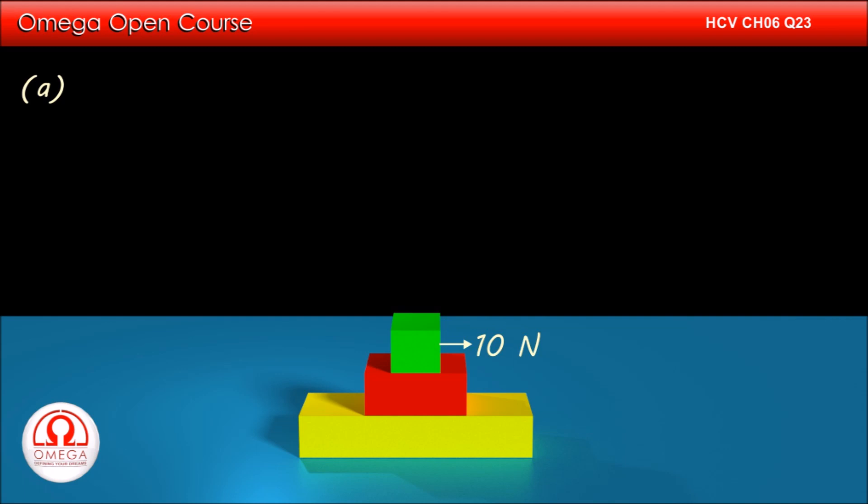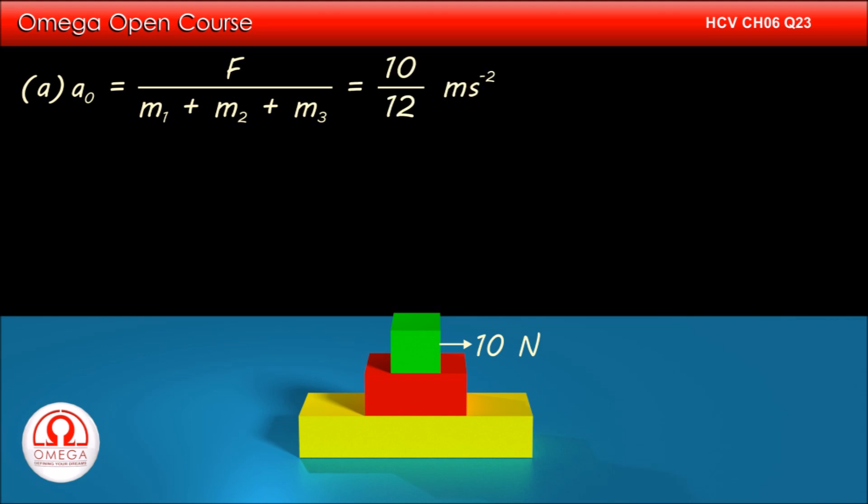If we assume that all 3 blocks move together, then they can be taken as a single system of mass M1 plus M2 plus M3. The only external force in the horizontal direction acting on this system is F. Therefore, if all the blocks move together, their common acceleration will be F divided by M1 plus M2 plus M3, or 10 by 12 meters per second square.